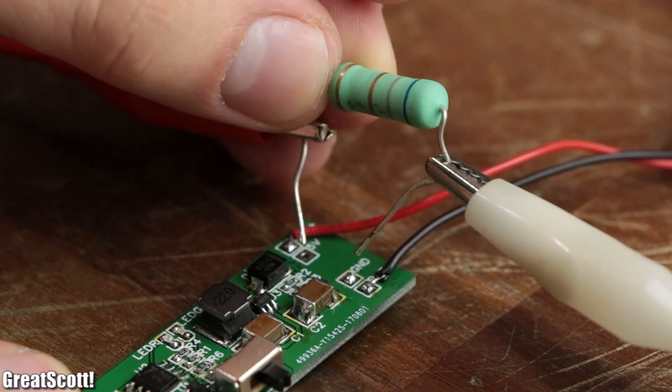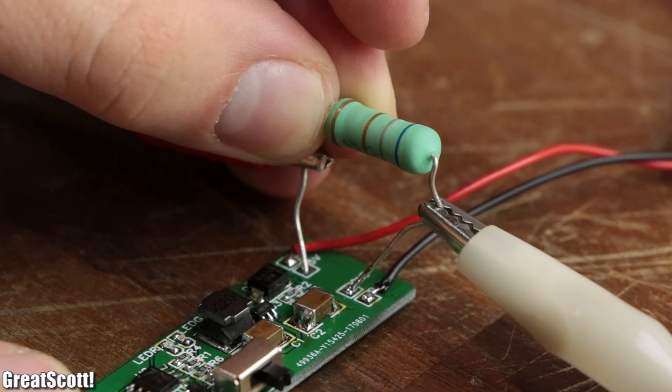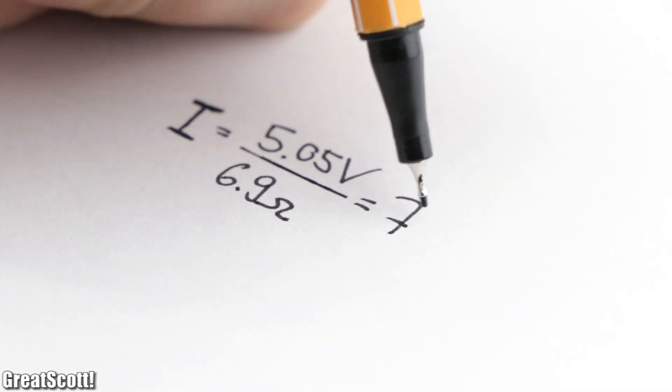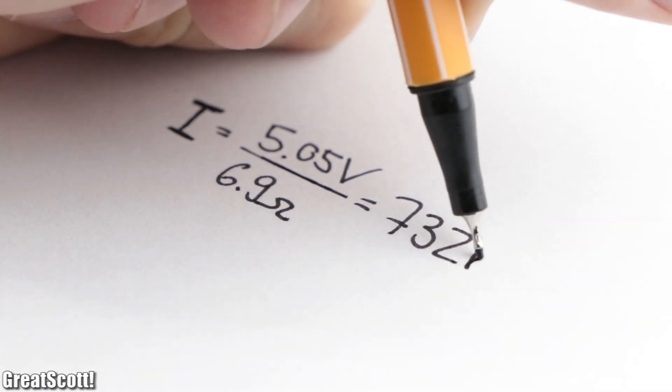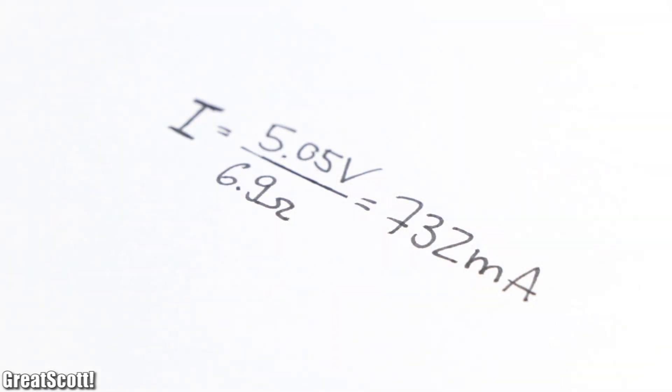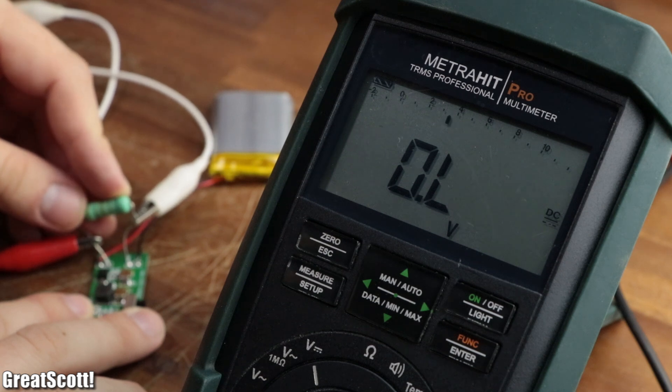Well at least until I connected a load of 6.9 ohm. According to Ohm's law, a current of 732 milliamps should have flown, but instead the output voltage broke down.